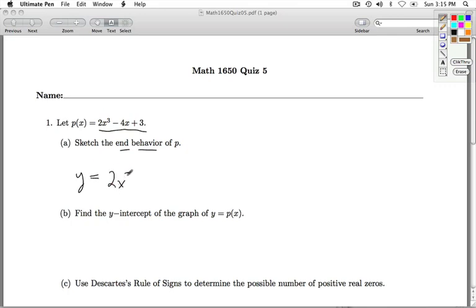So the end behavior is going to be 2x cubed, and since we have an odd power of x and we have a positive coefficient, it's going to start down here and end up there.